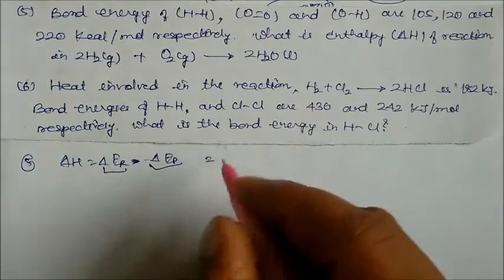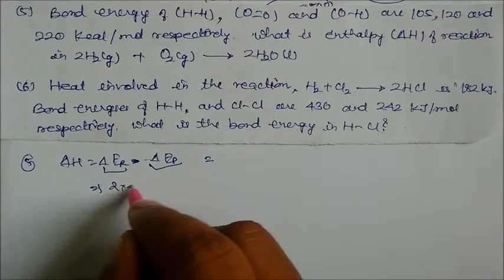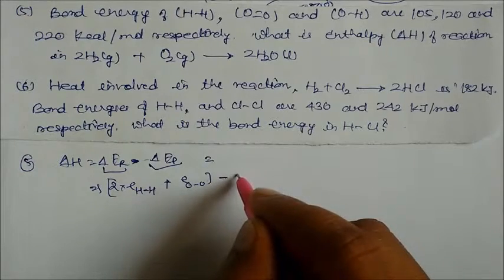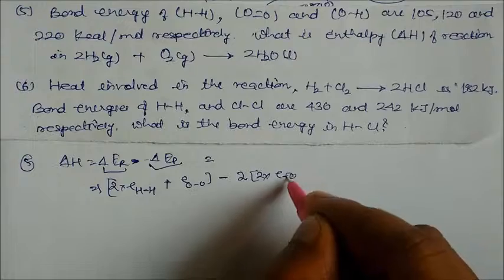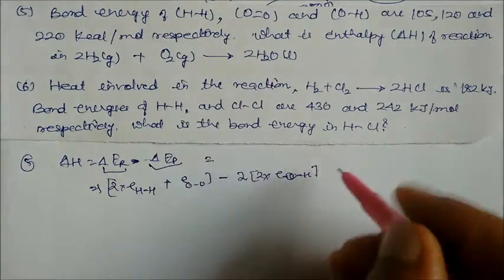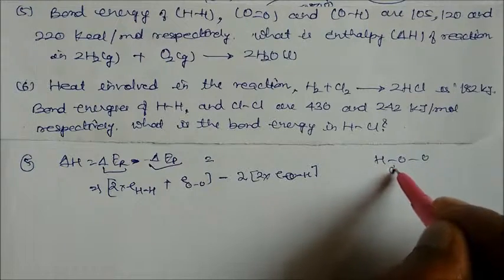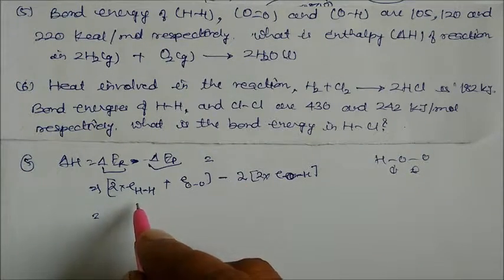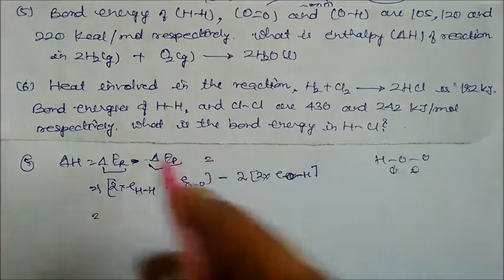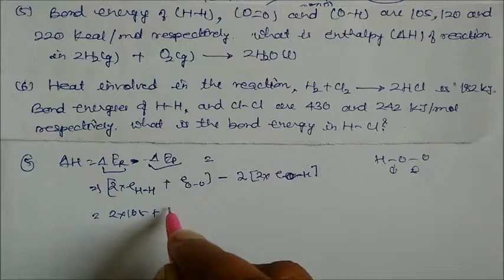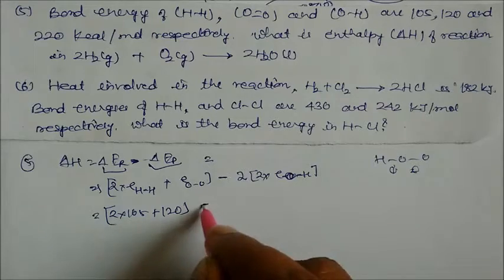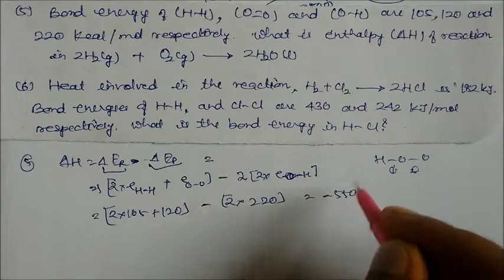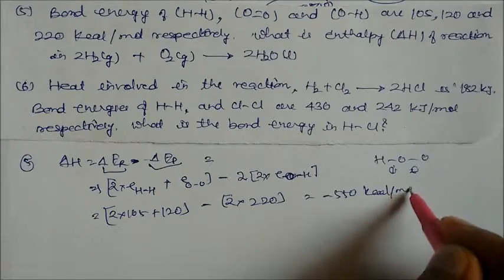Delta H = [2 × E(H-H) + E(O-O)] − [2 × 2 × E(O-H)]. Substituting: 2 × 105 + 120 minus 2 × 2 × 220. On solving, we get delta H = −550 kilocalorie per mole. So this is our answer.